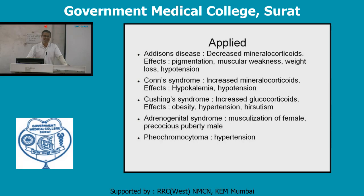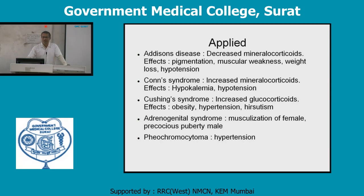Increased mineralocorticoid secretion causes Conn's syndrome, with effects that are the exact opposite of Addison's disease — hypokalemia and hypertension.